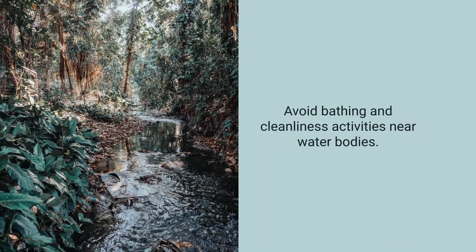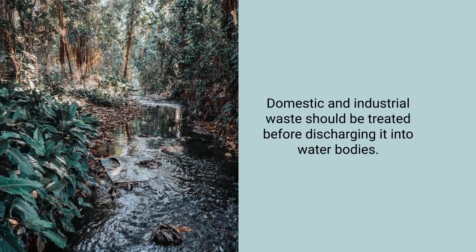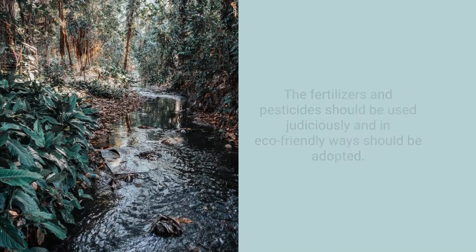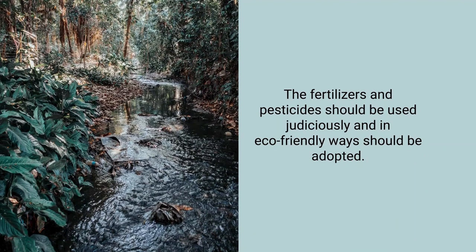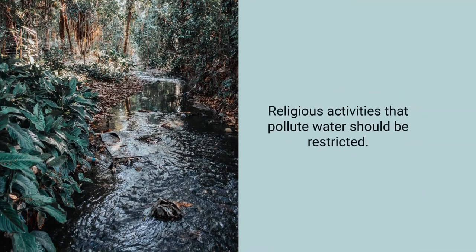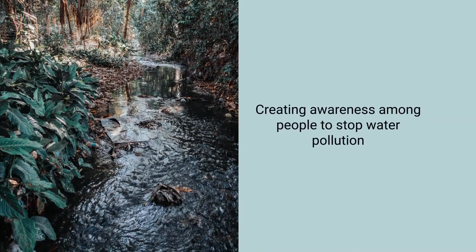Ask your students to suggest ways to prevent water pollution. They may suggest: avoid bathing and cleanliness activities near water bodies; domestic and industrial waste should be treated before discharging into water bodies; fertilizers and pesticides should be used judiciously in an eco-friendly way; religious activities that pollute water should be restricted — nowadays, submersion of idols in rivers has been restricted at certain places. Creating awareness among people to stop water pollution is essential.